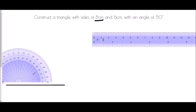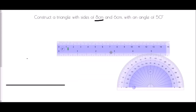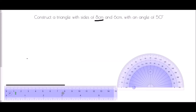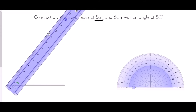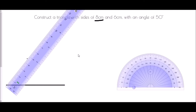Take the protractor away and bring back my ruler. I'm just going to rotate the ruler until it is in line with the 50 degree mark that I've just made, and now I can use that to draw my 6 centimeter line through that point along the edge of my ruler to 6 centimeters.